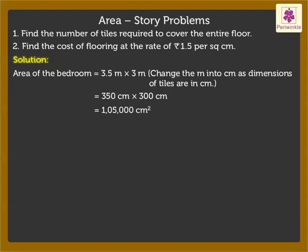Now let us find out the area of one tile. Area of one tile is equal to 50 centimeters into 50 centimeters, which is equal to 2,500 square centimeters.